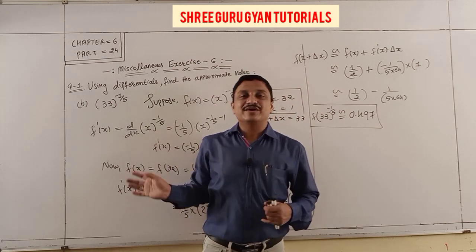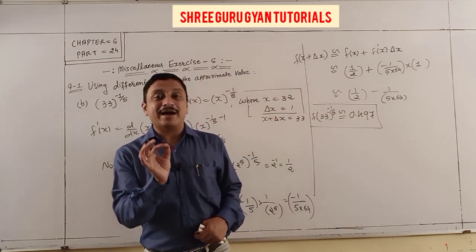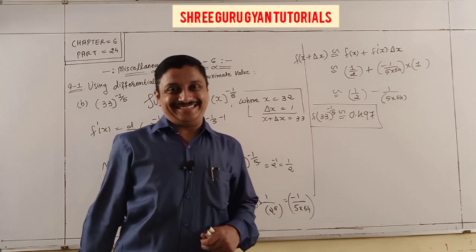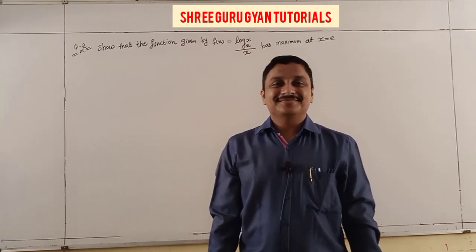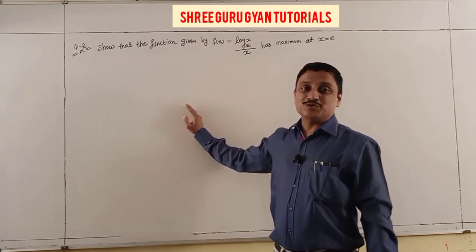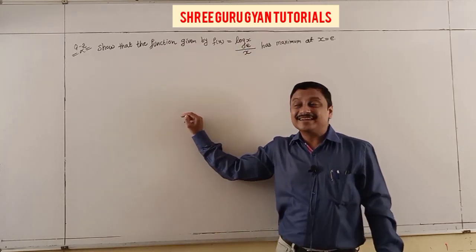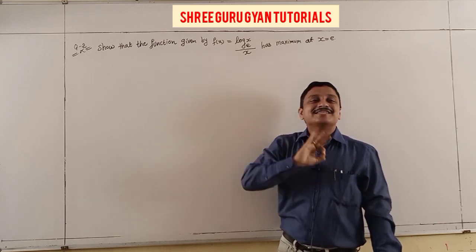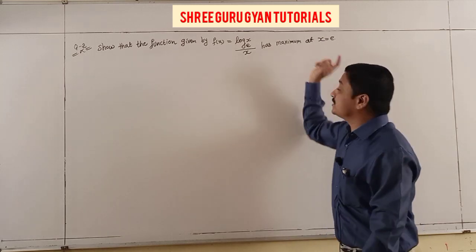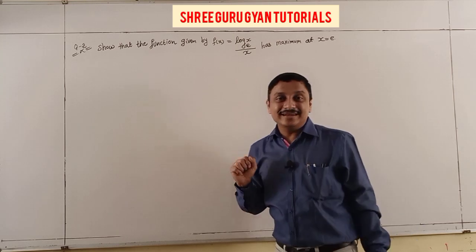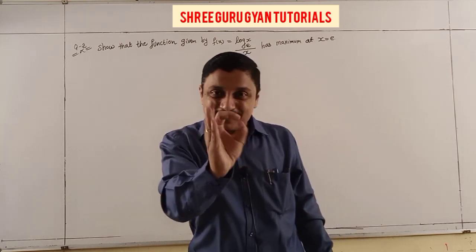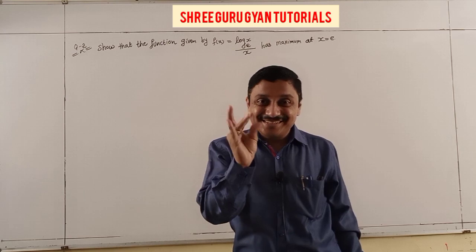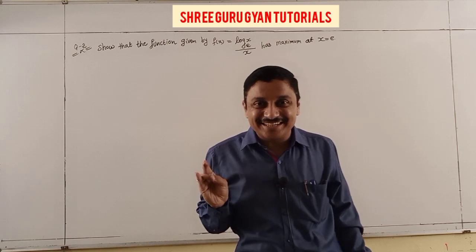Our approximate calculations are easily done. Now Question 2: Show that the function f(x) = log(x)/x has maximum at x = e. Maximum/minimum means Exercise 6.5 related — the step 1, step 2, step 3 method.